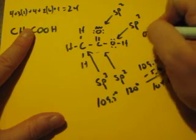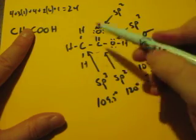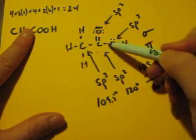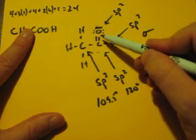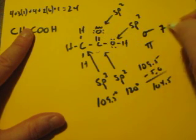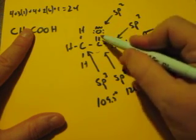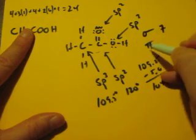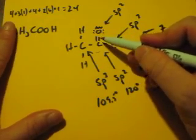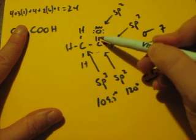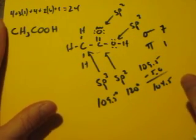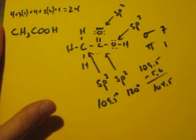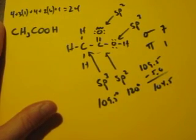If you need to know your sigma and pi bonds, well sigma are all your single bonds. So you count 1, 2, 3, 4, 5, 6 single, but a double bond also has one. So that's seven single bonds, or sigma bonds. Pi bonds are the additional bonds on top of the sigma. A double bond has one sigma and one pi, and there's your Lewis dot structure for acetic acid or ethanoic acid.